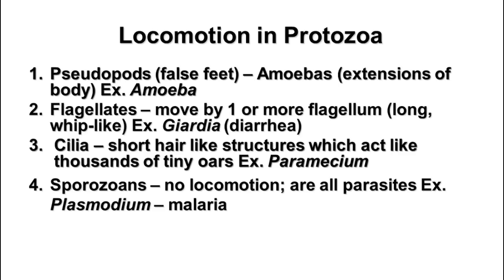The third group is the ciliates. They move by means of cilia, which are short hair-like structures, similar to flagella in structure but much shorter and much more numerous. They can move together like oars on a ship. An example of a ciliate is paramecium. The fourth group is the sporozoans, which generally do not have a method of locomotion. They are all parasitic, and an example is plasmodium, which causes malaria.